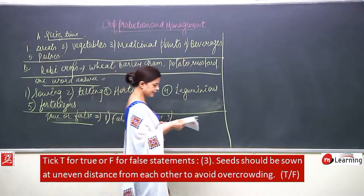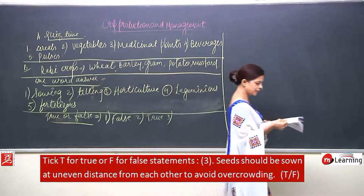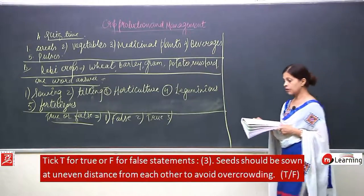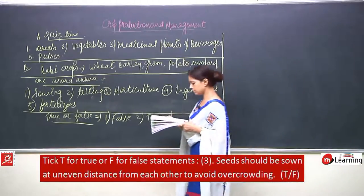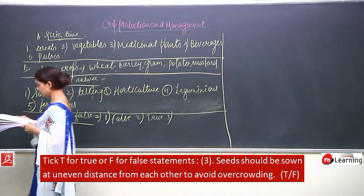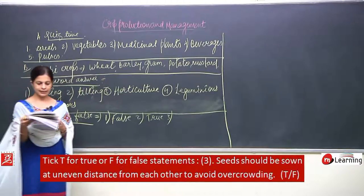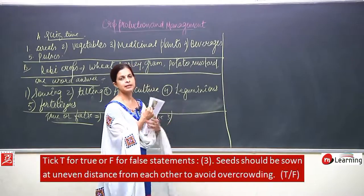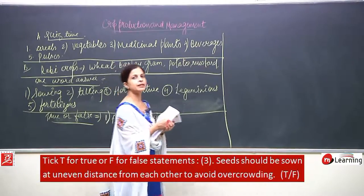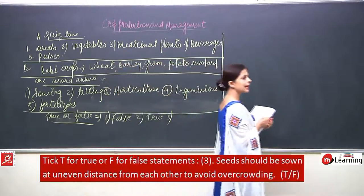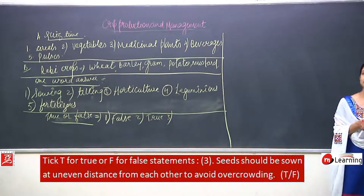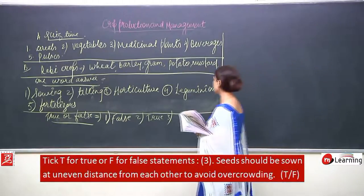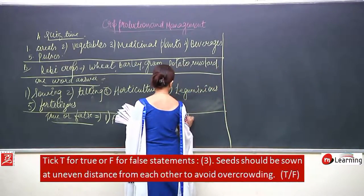Number 3: seeds should be sown at uneven distance from each other to avoid overcrowding. False — to avoid overcrowding it is very important that seeds are sown at a particular distance. We cannot keep sowing seeds randomly.